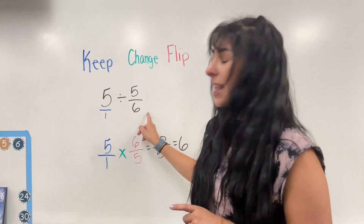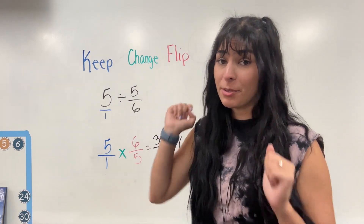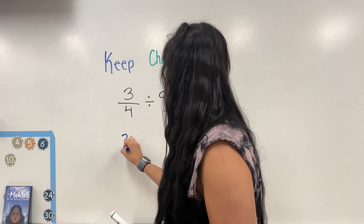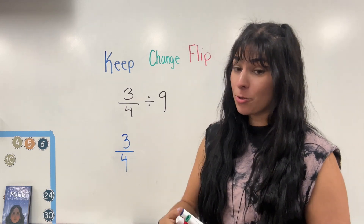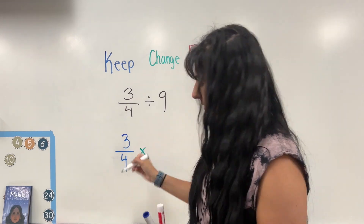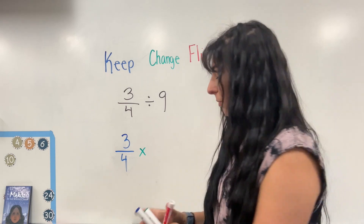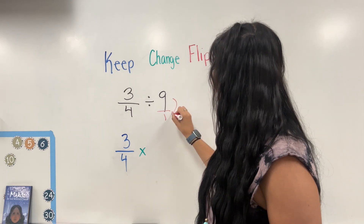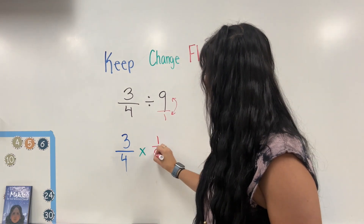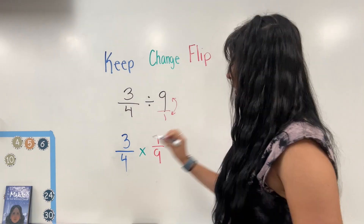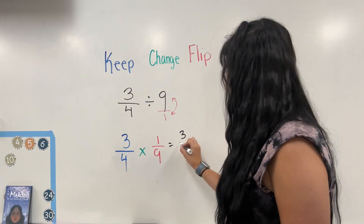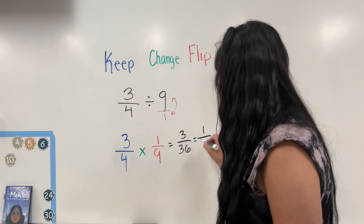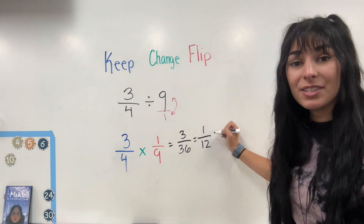But what if our whole number is at the end where I'm supposed to flip? I have three fourths divided by nine. I'm going to keep that first number, three over four, and change my division to multiplication. Then I need to flip my last number and find the reciprocal. First I need to make it a fraction by adding the denominator of one, and then that is what I'm flipping — so I will have one over nine. I multiply like normal: three times one equals three, four times nine equals 36. I can simplify that — three goes into 36 twelve times — so it simplifies to one twelfth.